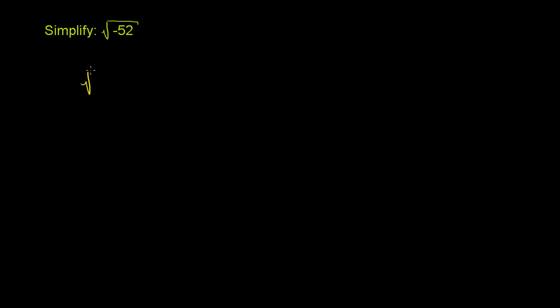So we can rewrite negative 52 as negative 1 times 52. So this can be rewritten as the principal square root of negative 1 times 52. And if we assume this is the principal branch of the complex square root function, we can rewrite this as the square root of negative 1 times the principal square root of 52.